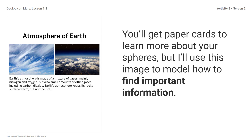Earth's atmosphere is made of a mixture of gases, mostly nitrogen and oxygen. The small amounts of other gases, including carbon dioxide, help Earth's atmosphere keep its rocky surface warm, but not too hot. Now that I've read about the atmosphere of Earth, I will read about the atmospheres of Mercury, Venus, and Mars in order to analyze differences and make comparisons. After I've read all the cards from my sphere and made notes, I will answer the questions on the screen.